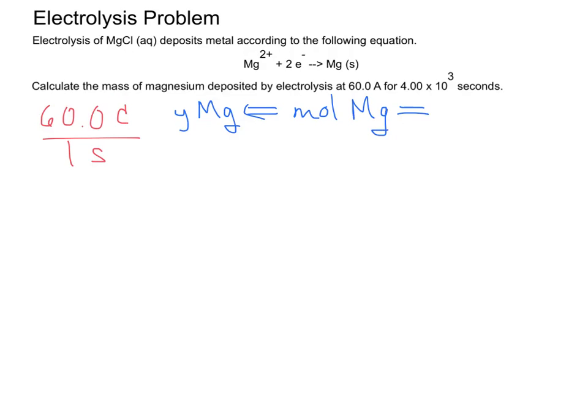But to get to moles of magnesium somewhere, we're going to need to find the moles of electrons. And that means you're going to need the relationship between the electrons and the magnesium, and that's from this balanced half reaction over here. And so we're also going to need the fact that there are two moles of electrons for every one mole of magnesium. That's going to be another important conversion factor.